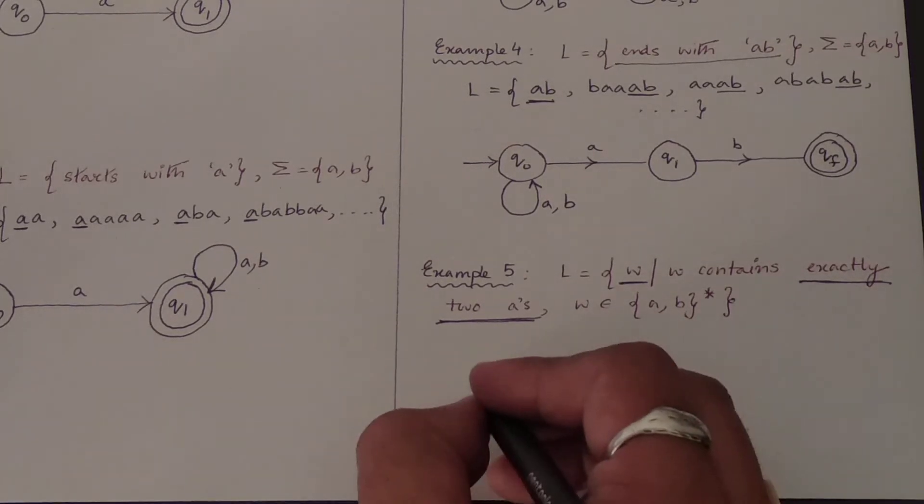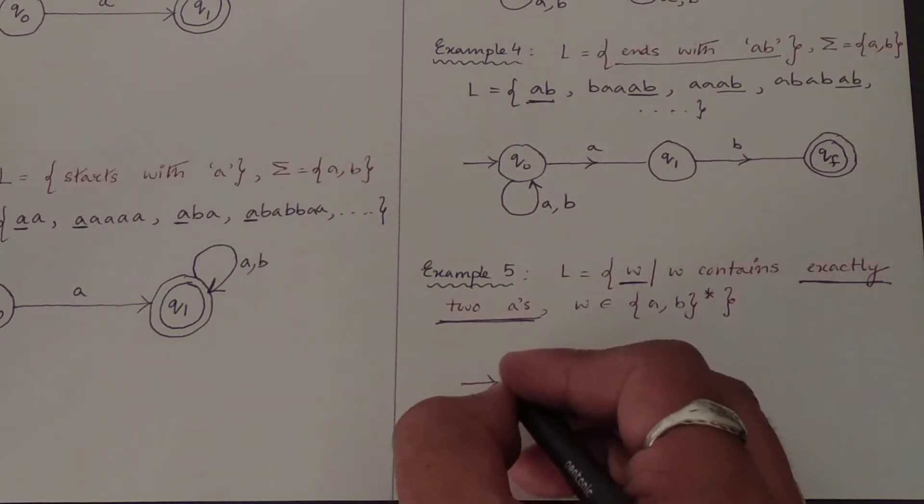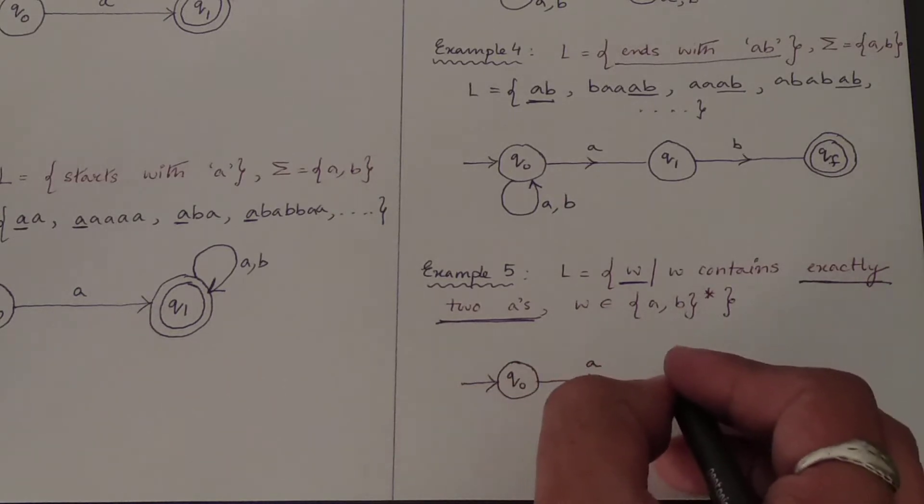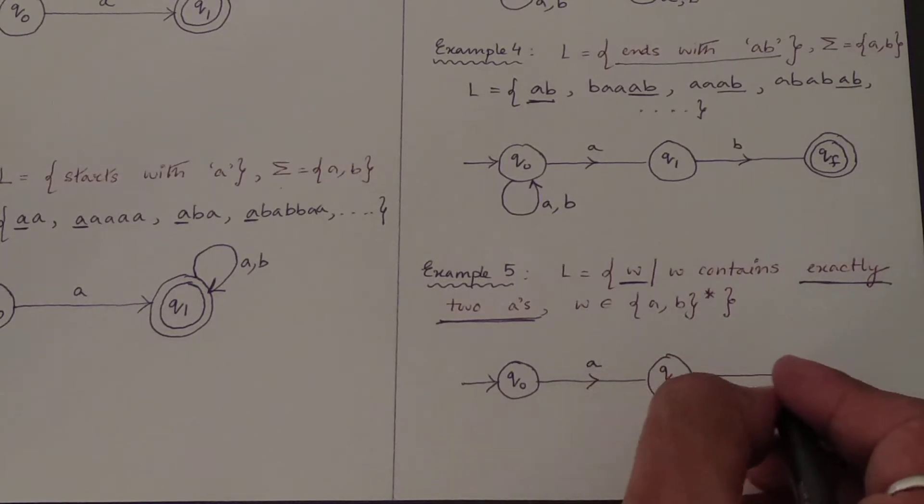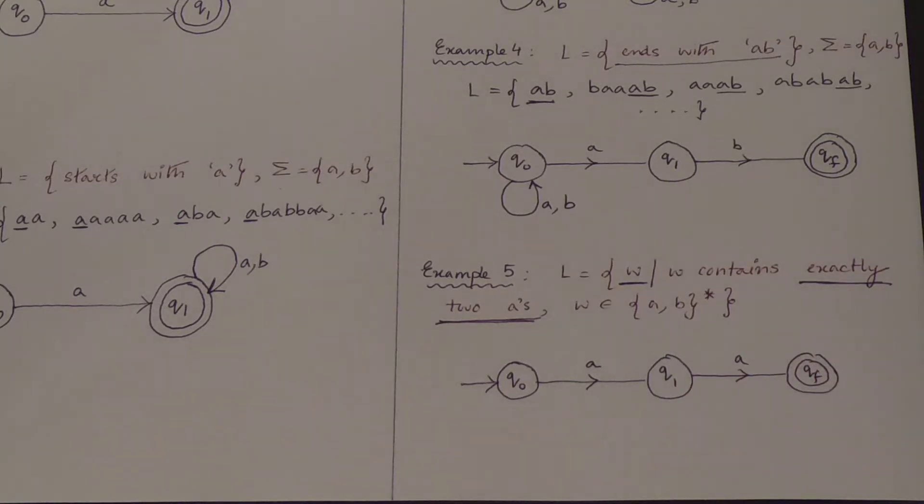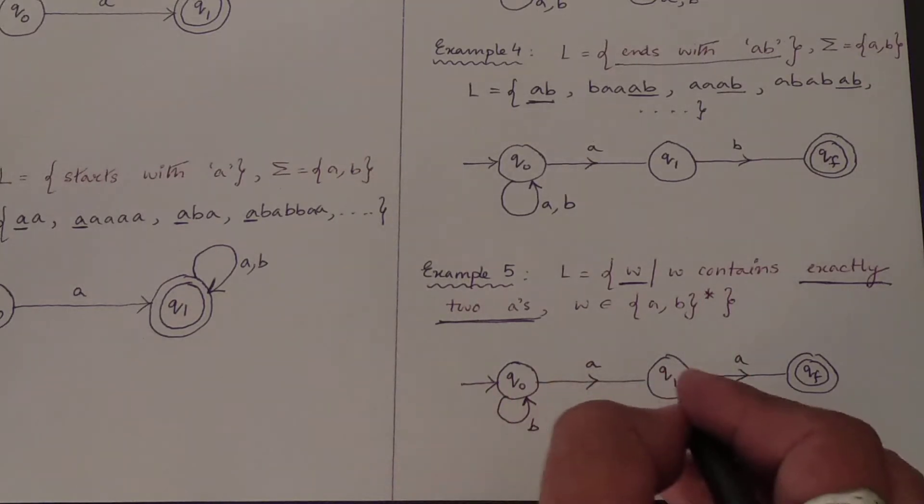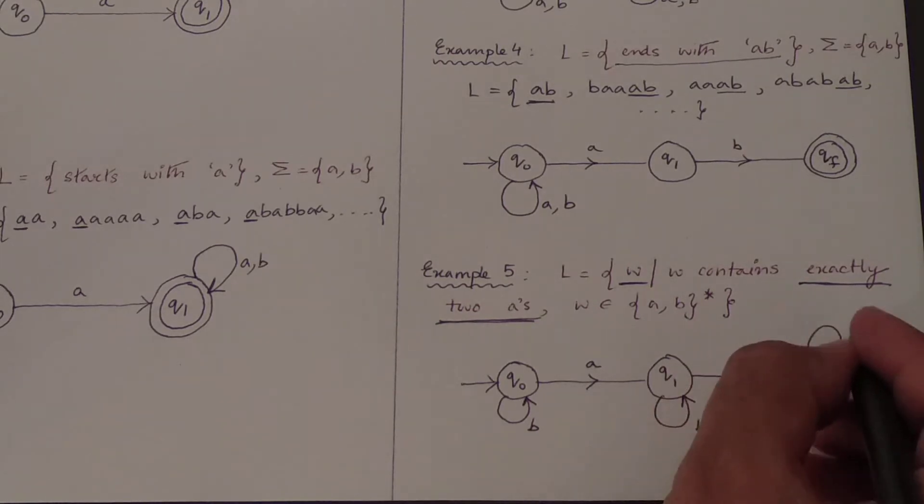So let me draw for exactly two A's. This will be Q0, this is one A Q1, and this is another A, and this will be your final state. So this will be your exactly two A's, not more than or not less than that as well.